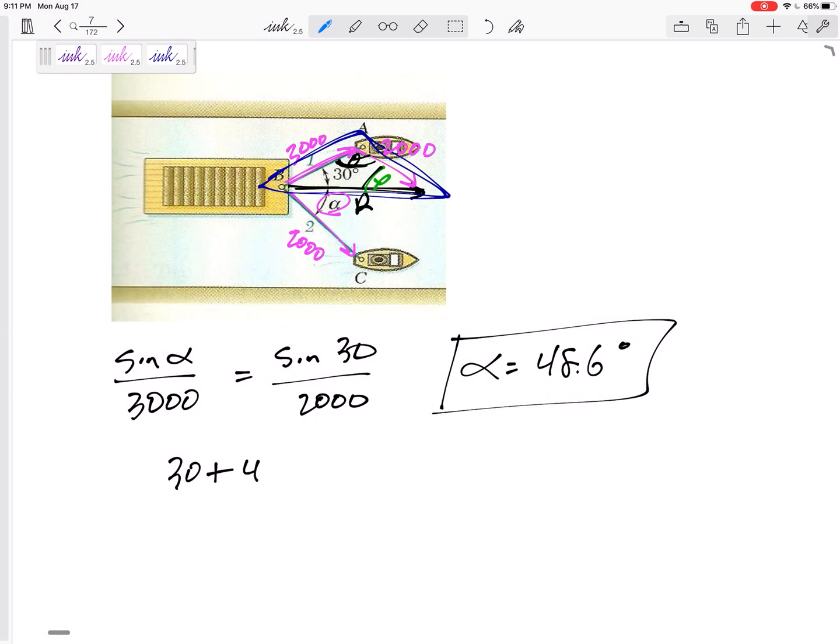30 plus 48.6 plus this angle that I'm looking for has to add up to 180, right, because the three interior angles of a triangle add up to 180. This would be 101.4 degrees.